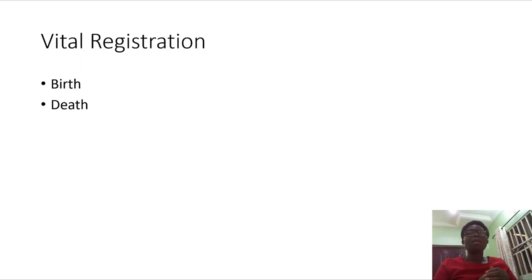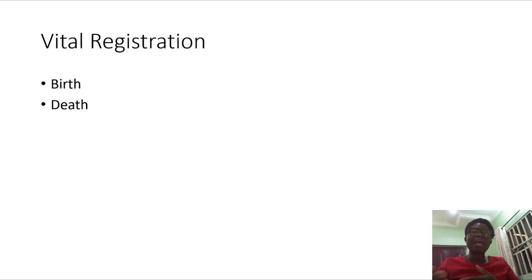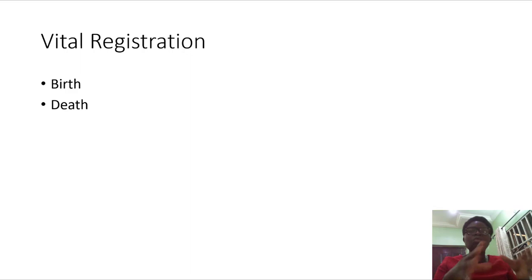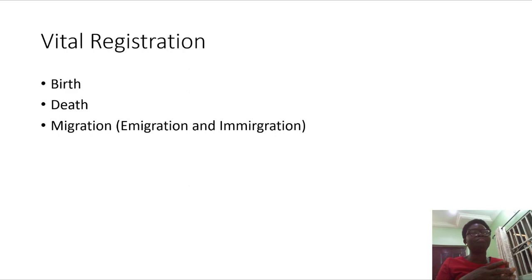The next vital registration is death. Educational planners need to know the number of deaths. If more deaths occur within the school-age population, it will reduce the number of students in school. If the deaths are higher at older ages — say 60 and above — it means you'll have a younger population, more school-age children to attend to, placing a greater burden on educational facilities.